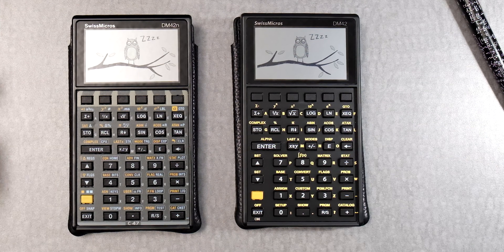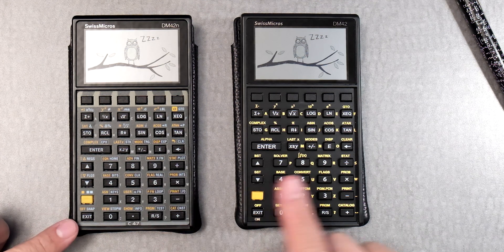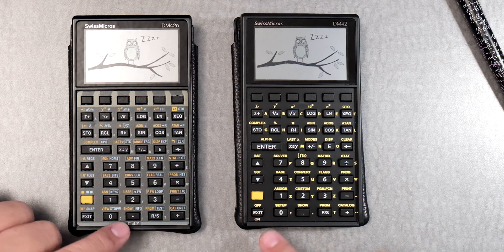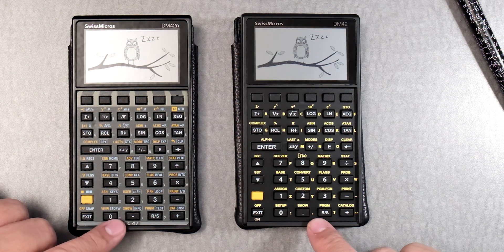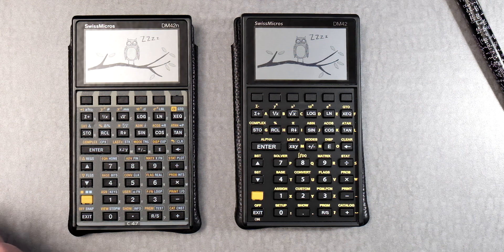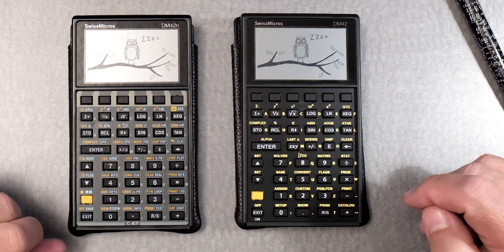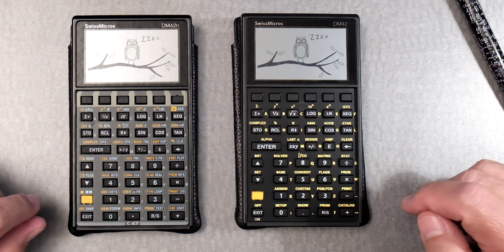I wanted to show the performance difference between a DM42 and a DM42N. This one's the N, this one's the 42. Both of them have the C47 — the latest stable version from the end of 2024, no beta. And I wanted you to see some comparisons in terms of calculations.